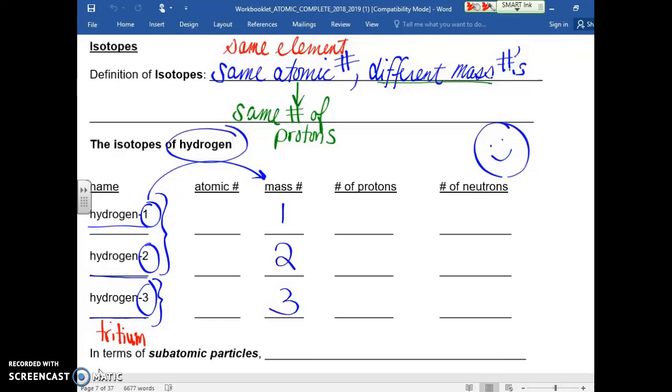The atomic number will be the same among all of them. Hydrogen has an atomic number of 1, of 1, and of 1. So, we recall that the mass number is equal to the sum of the number of protons and the number of neutrons.